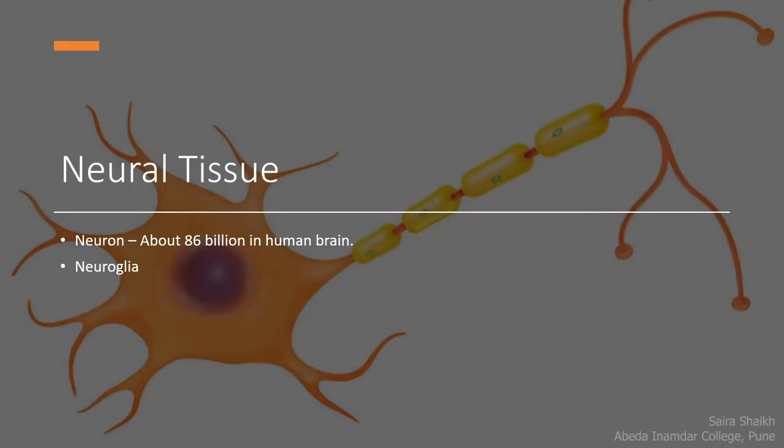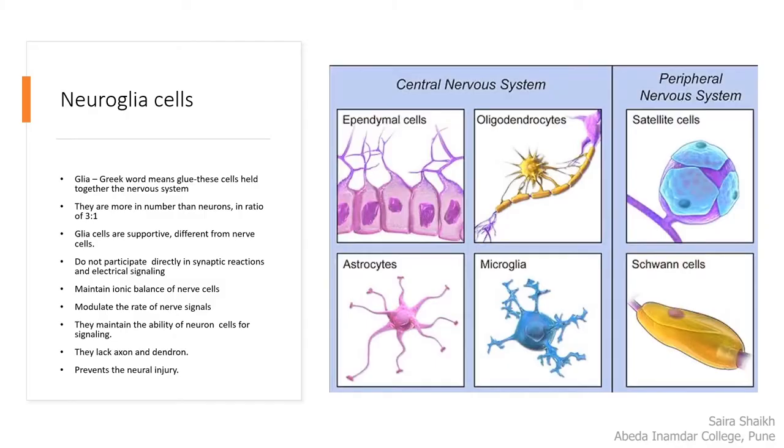Let us start about the neural tissue, or the nervous tissue. It is made up of two types of cells: neurons and the neuroglia. Neurons — there are about 86 billion of them in the human brain. We will first study about the neuroglia cell.